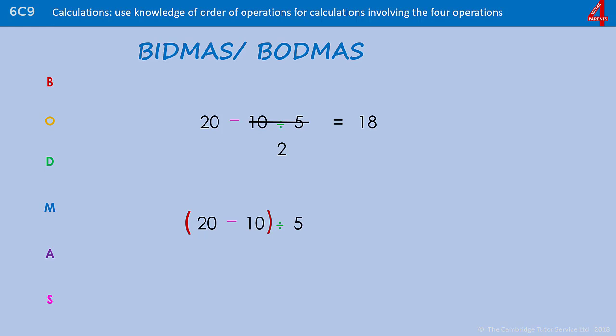If we look at the second one however, we have to do the subtraction first because it's in the brackets. 20 take away 10 is 10. 10 divided by 5 is 2. Two very different answers to what looked initially as if it was going to be exactly the same.